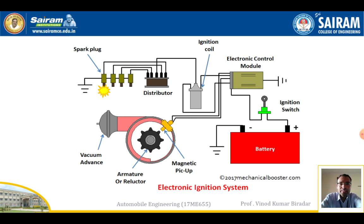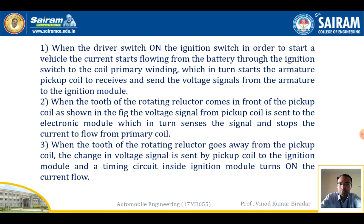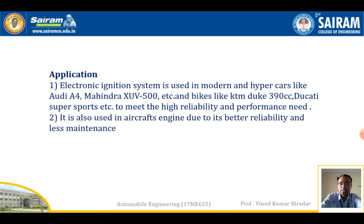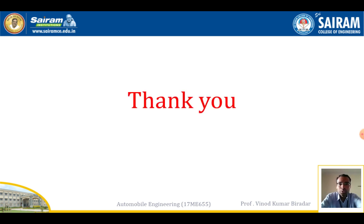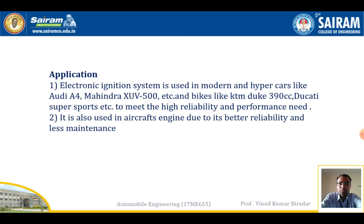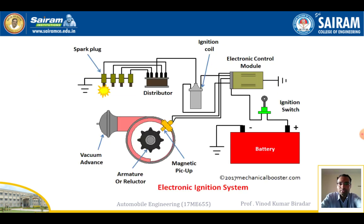The main advantage of the electronic ignition system is that it is used nowadays in almost all vehicles, such as the Mahindra XUV 500, Audi A4, and some sports cars. It is also used in aircraft engines due to its better reliability and less maintenance compared to battery and magneto ignition systems. I hope you understand the working and circuit diagram of the electronic ignition system. Thank you.